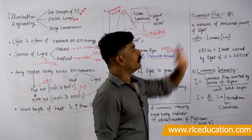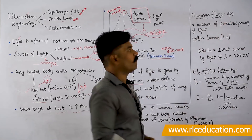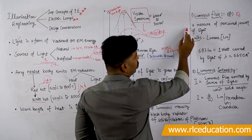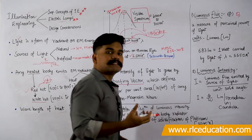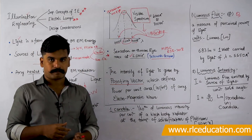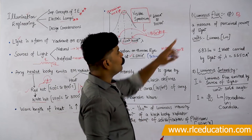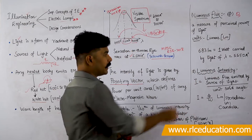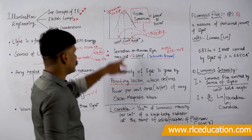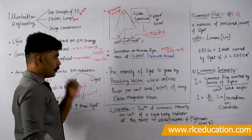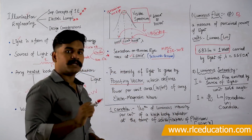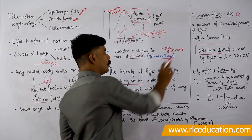The first definition is luminous flux, represented by φ (phi), though some textbooks also use capital Q. Luminous flux is a measure of the perceived power of light — it specifies how much power is carried by a particular light wave. The unit of luminous flux is lumens (lm). An important relation: 683 lumens equals 1 watt of power carried by light of wavelength 5550 angstroms, which corresponds approximately to green light.